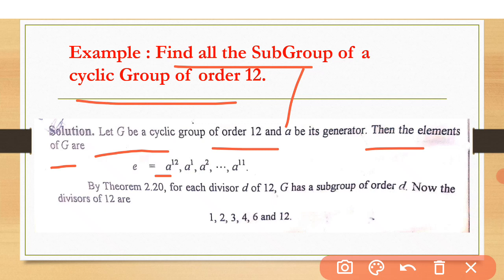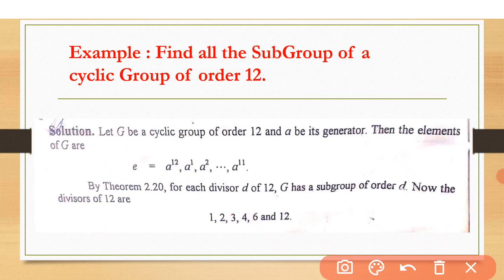For example, the first element has order 12, then it gives us the identity. So there are 12 elements in total. By the theorem described earlier, for each divisor D of 12, G has a unique subgroup of order D.